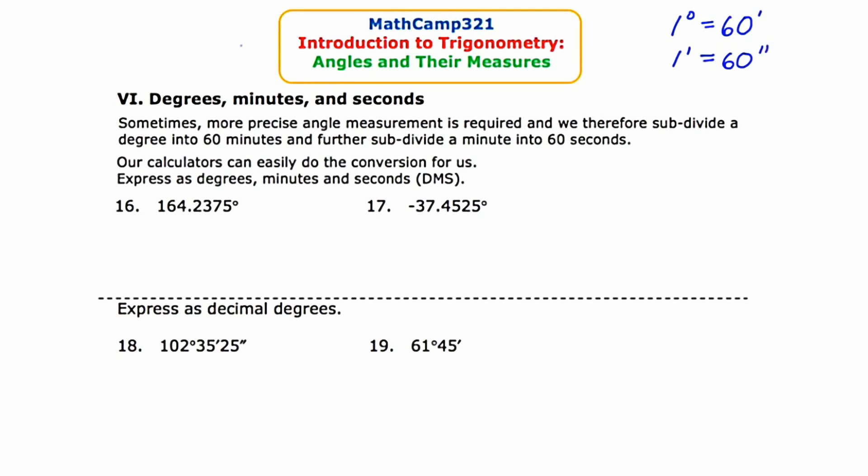As we go to questions 16 and 17, we're given angles in decimal degrees—164.2375 degrees. I want to express these two angles in 16 and 17 as degrees, minutes, and seconds. This is often referred to as DMS: degrees, minutes, and seconds.